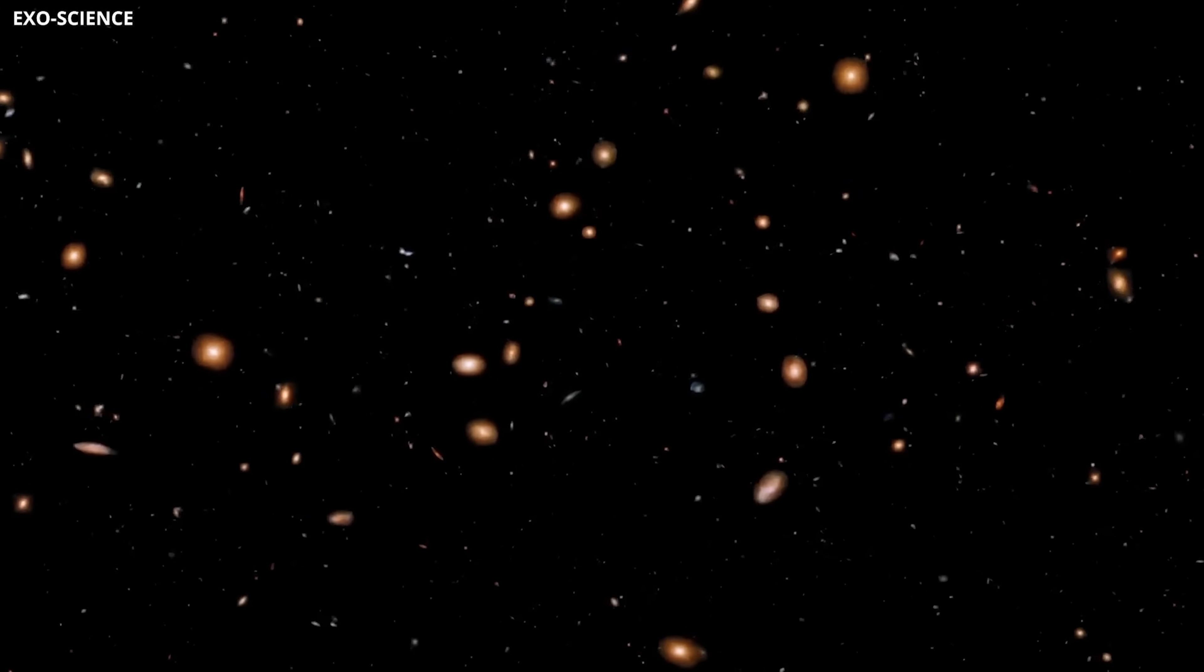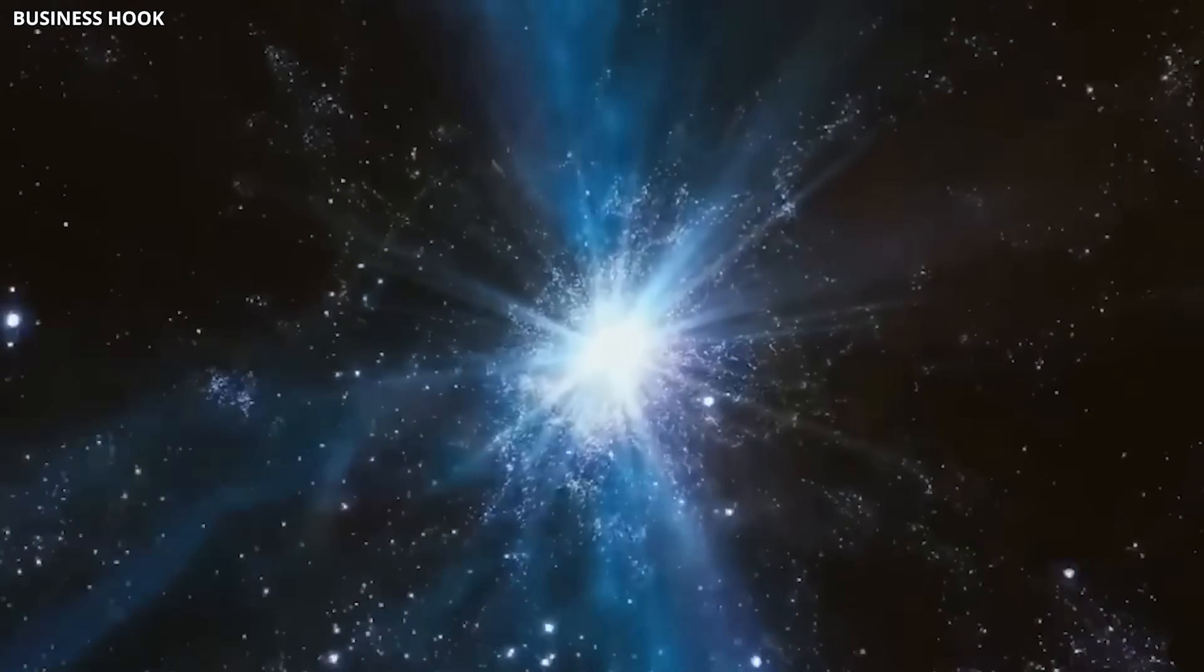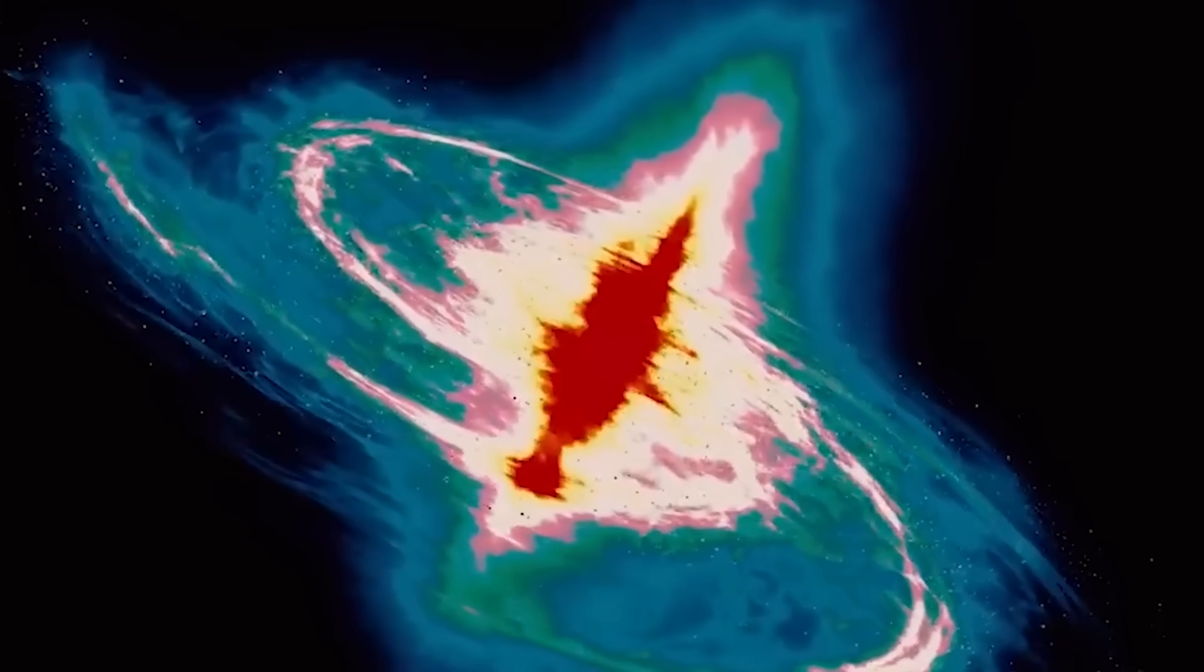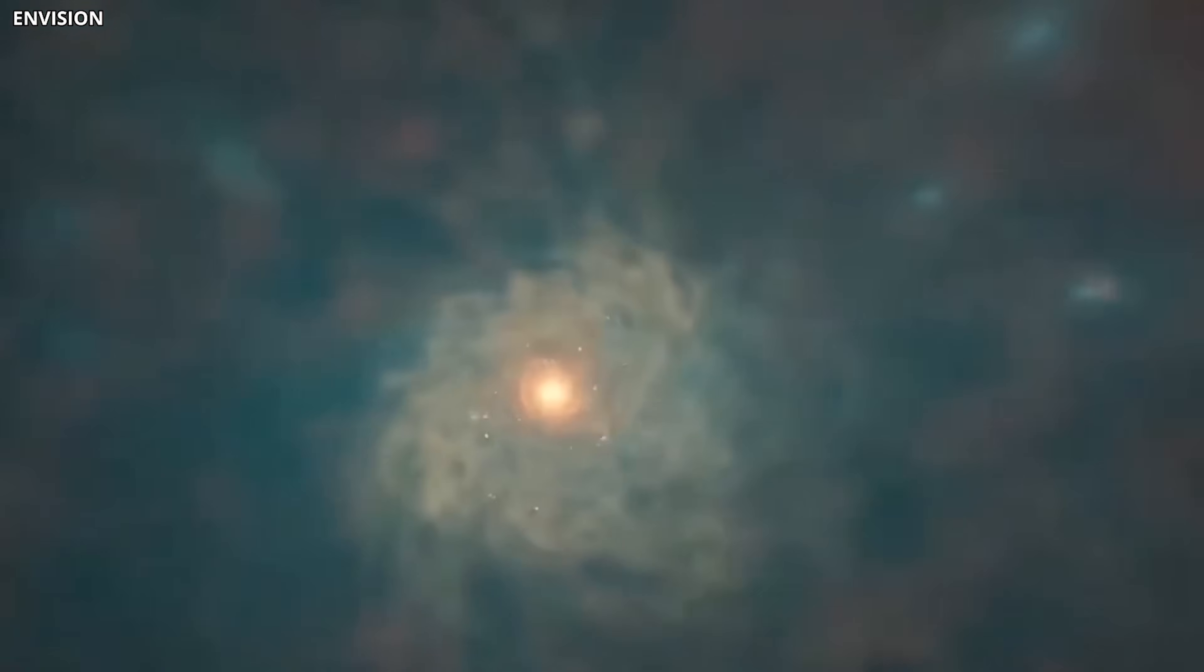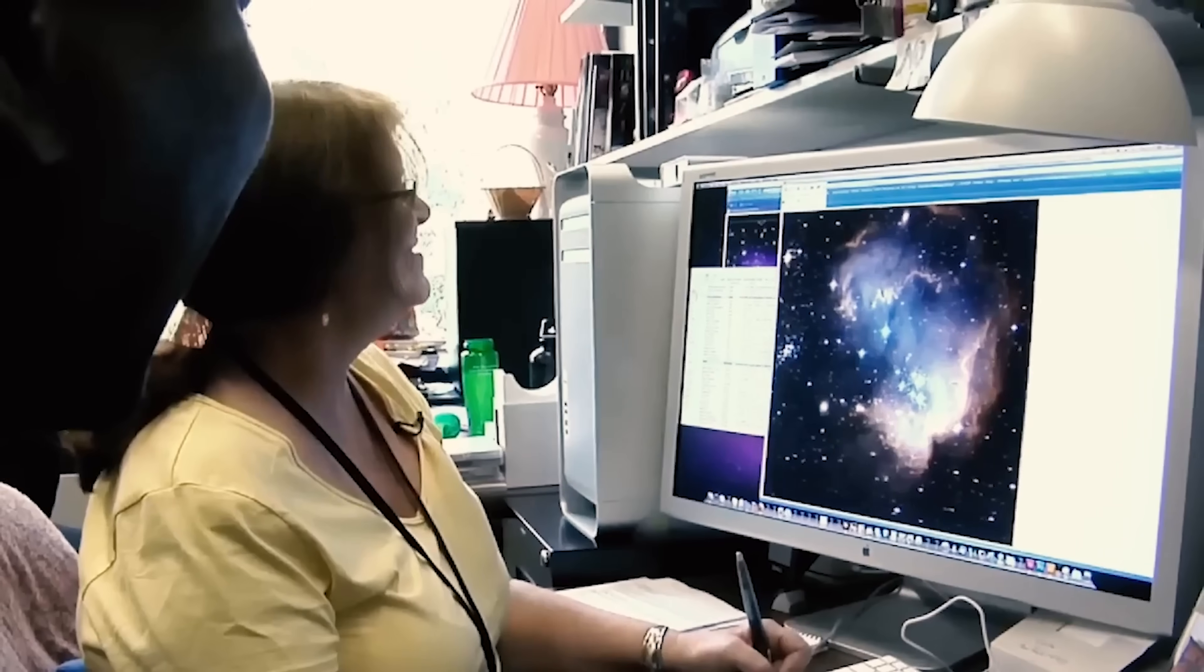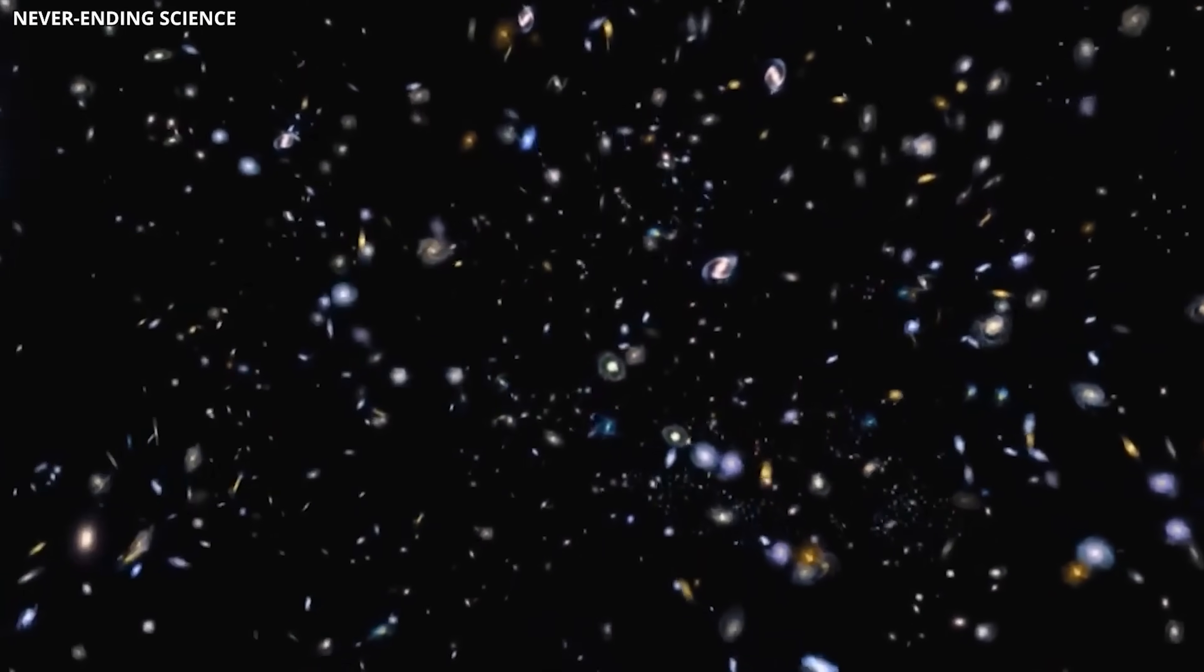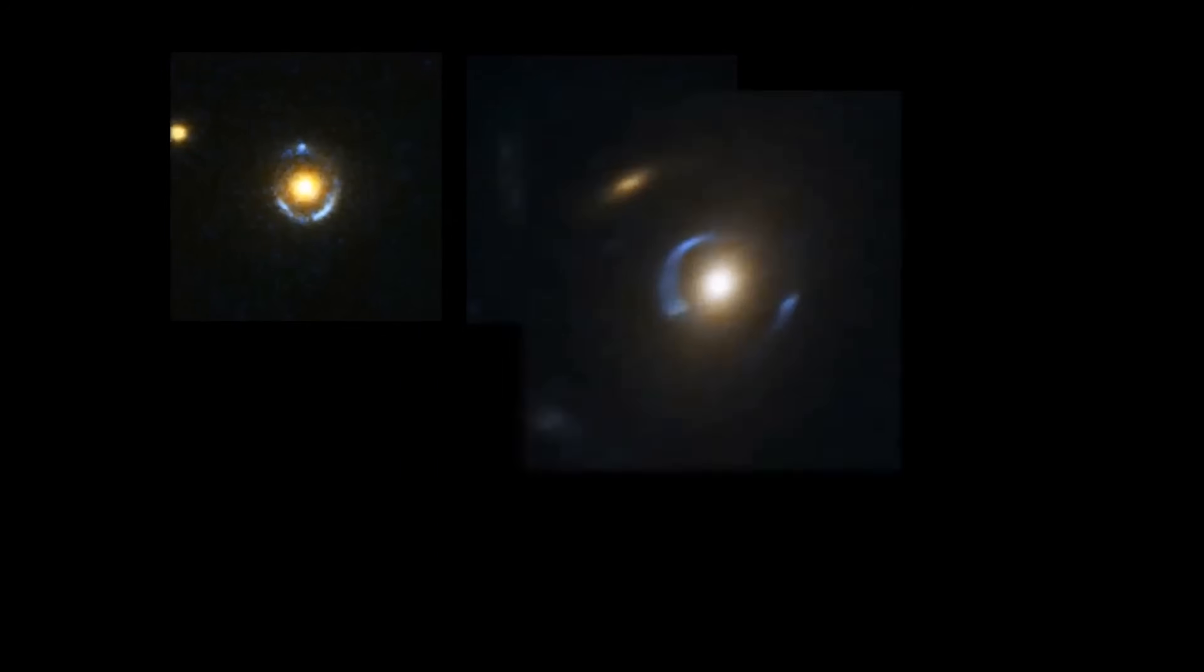Several of the galaxies showed spectral signatures of oxygen and neon, elements forged inside stars. The presence of those elements means these galaxies had already gone through multiple rounds of star formation. This wasn't a first generation of stars. This was a community of stars already enriched by the death of earlier ones. It also meant there wasn't enough time for these galaxies to have formed under our traditional timeline.